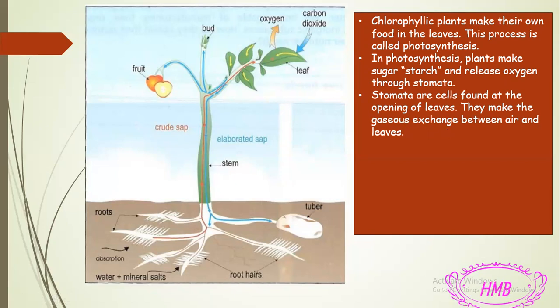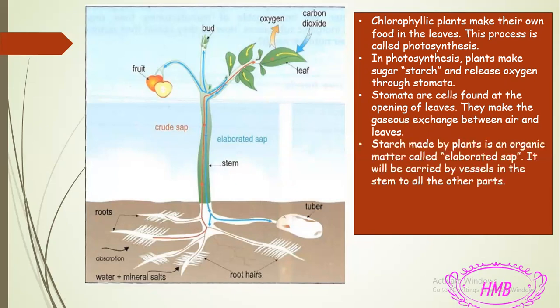The function of the stomata is to exchange gaseous molecules between the air and the leaves. The starch made by the plants is an organic matter called elaborated sap — that's the blue one in the diagram. The elaborated sap contains the sugar made by the plant. It will be carried by the vessels in the stem to all parts of the plant, not only staying in the leaves, because all parts need this starch in order to grow.